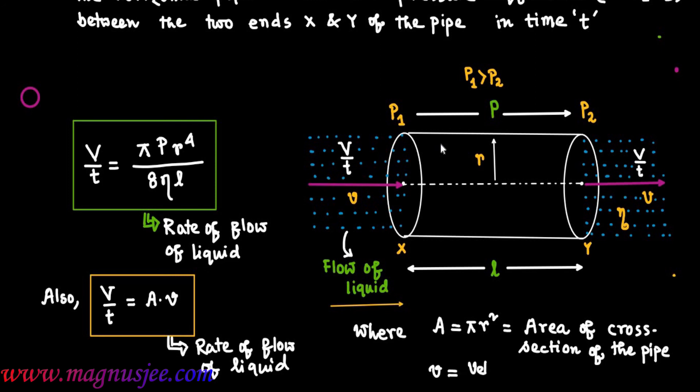Small v is the velocity with which liquid flows into the tube and flows away from the tube.